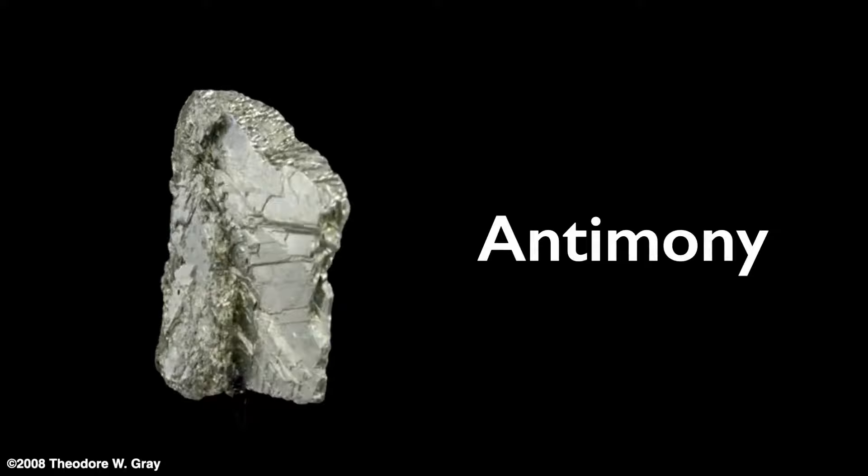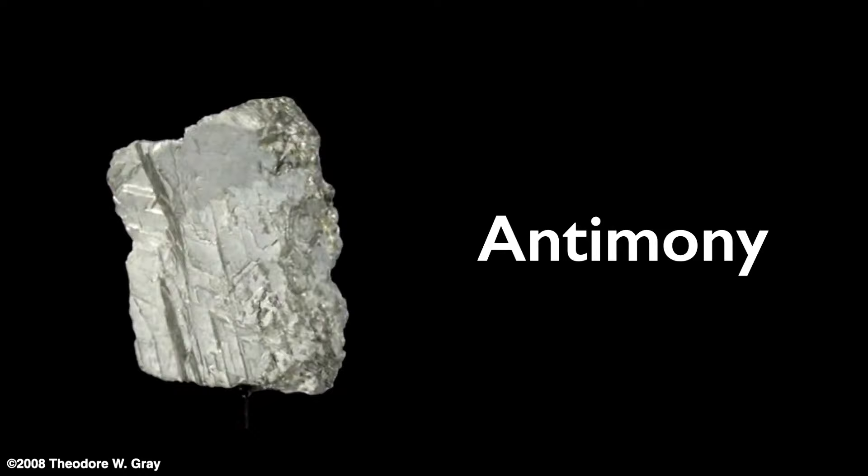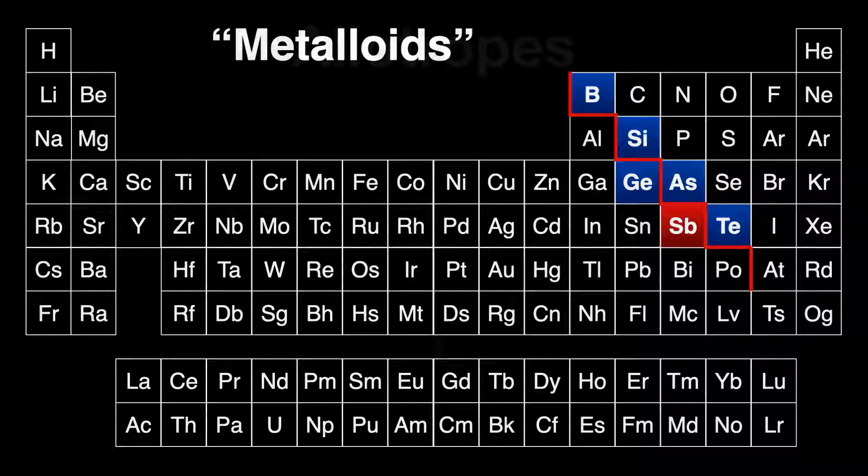Antimony is a silvery gray and, unlike many metals, is hard and brittle. Hitting it with a hammer would not dent it, but rather smash it into many pieces. It is not malleable. Antimony is considered a metalloid. It has qualities of a metal, but also qualities of a non-metal. In the periodic table, generally speaking, metals are to the left of the red line and non-metals are to the right. Antimony straddles the line in qualities.